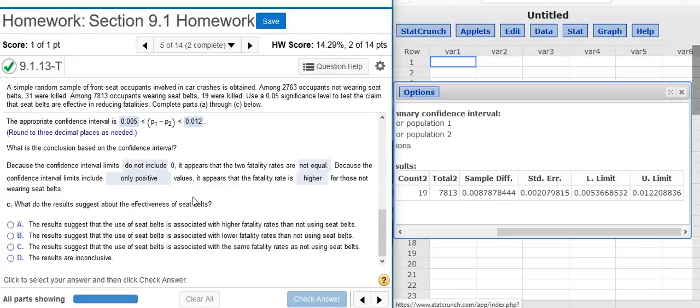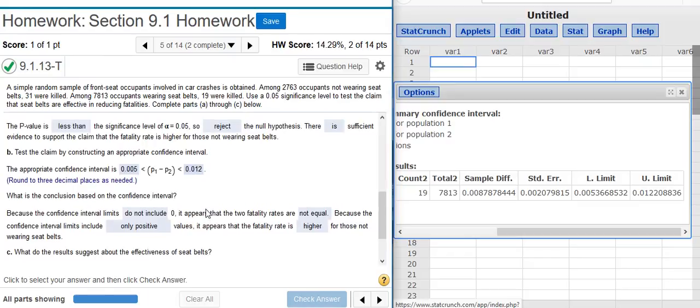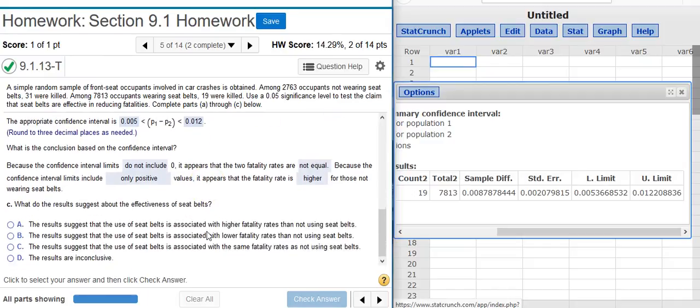Now, part C asks, What do the results suggest about the effectiveness of seatbelts? If we go back and we look at what we've actually concluded from the hypothesis test and the confidence interval, remember that for proportions, they don't necessarily match up. And when they don't match up, you want to go with the hypothesis test. In this case, they actually are matching up. Both of the hypothesis test and the confidence interval lead to the conclusion that the fatality rate is higher for those not wearing the seatbelts. And so we have a pretty good statistical case for suggesting that the use of seatbelts is associated with a lower fatality rate than not using the seatbelt. So I'm going to select that answer. Excellent!